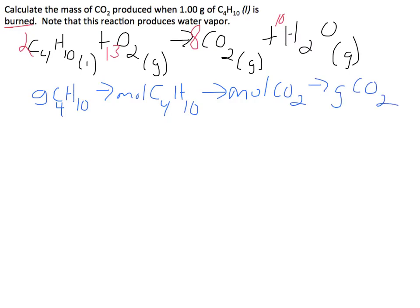We're starting with 1.00 grams of C4H10. We can convert that to moles using the fact that one mole of C4H10 equals 58.0 grams of C4H10. This cancels our grams.